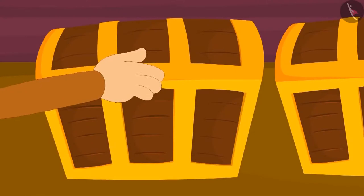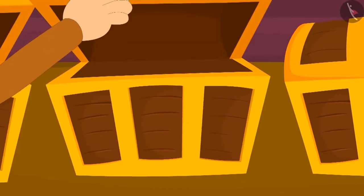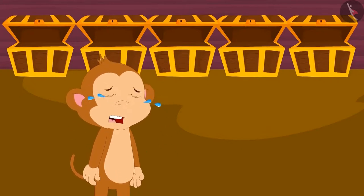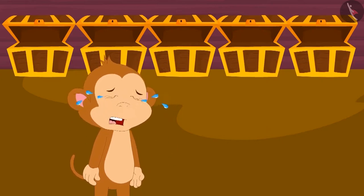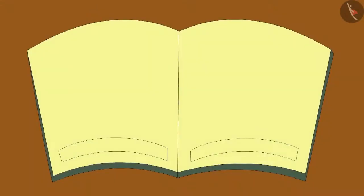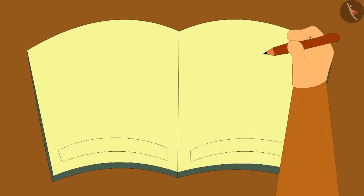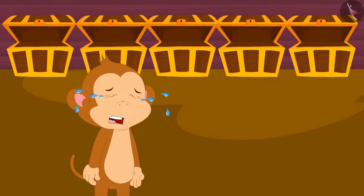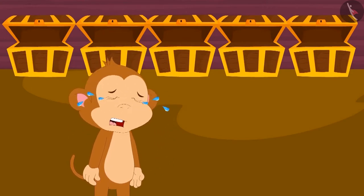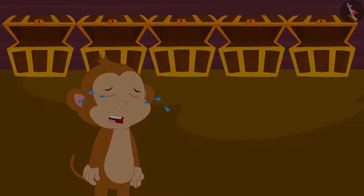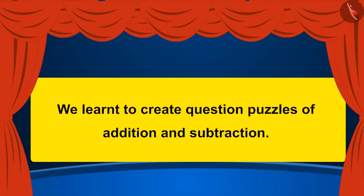But as he opened the lockers, they all were empty. Babban became sad. He thought that this time he would make the picture with more thoughtfulness. But as he went near the book, the book disappeared from there. Babban started crying, having become a victim of his greed. Children, in this lesson we learned to create question puzzles of addition and subtraction.